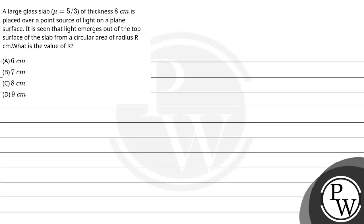Hello Bachoom, let's read this question. The question says a large slab mu equals to 5 by 3 of thickness 8 cm is placed over a point source of light on a plain surface.